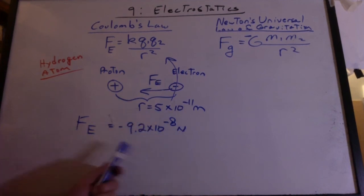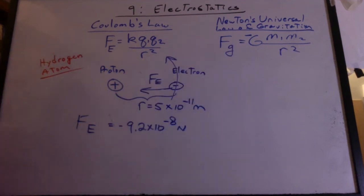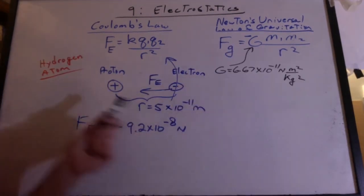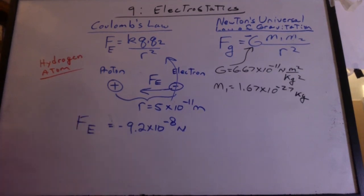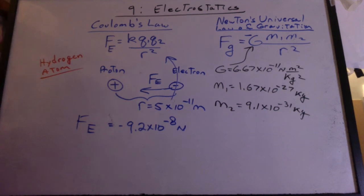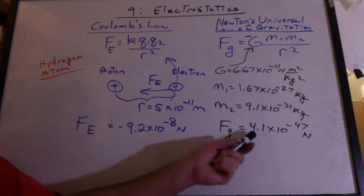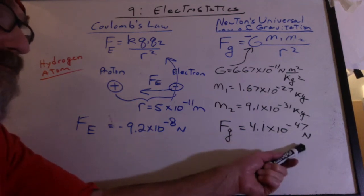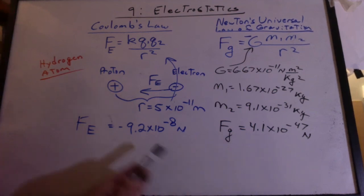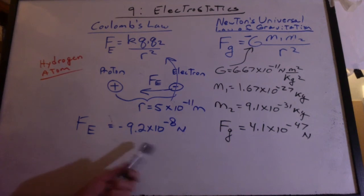Now that seems like a really small force — but let's figure out what really holds this atom together. Could it be gravity instead? Using Newton's law of gravitation with G, the mass of the proton (1.67 times 10 to the minus 27 kg), the mass of the electron (9.1 times 10 to the minus 31 kg), and the same distance, the gravitational force is 4.1 times 10 to the minus 47 Newtons. Now that is a small number. You thought the electrostatic force was small until you find something really small. So it's the electrostatic force that's holding that atom together — not gravity.